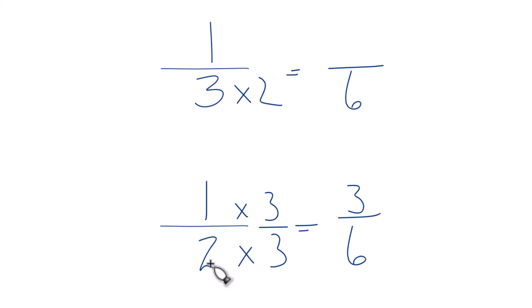Three over six and one over two are both equal to 0.5. They're equivalent fractions. Up here, we'll multiply the numerator by two. One times two is two. We have two sixths.